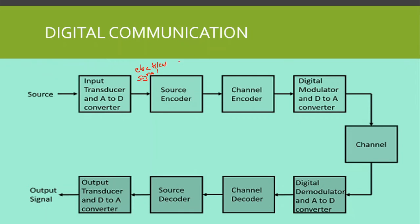Source encoding gets rid of redundant bits and unnecessary bits — this is compression of data. Unnecessary bits are filtered out, and in this way we can effectively utilize bandwidth better.